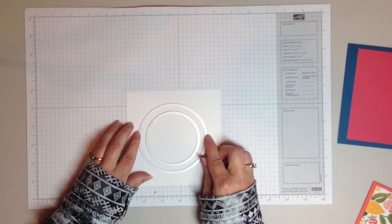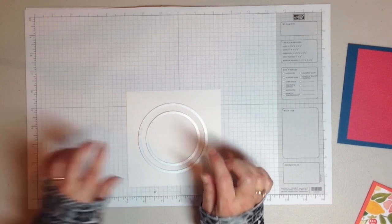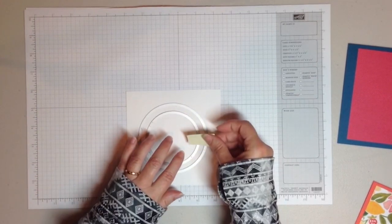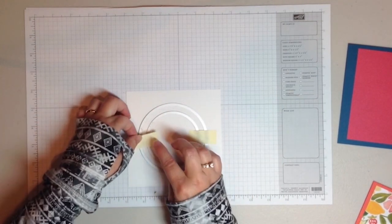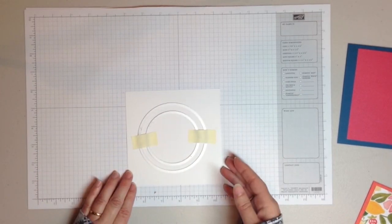concentrically. Just take a little bit of time to make sure that you've got that spaced correctly. And then I use a post-it note to hold those in place and run those through the Big Shot.